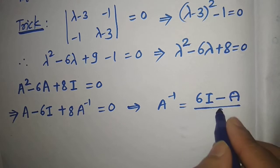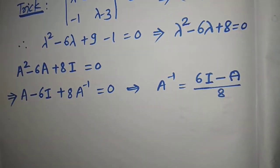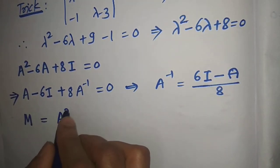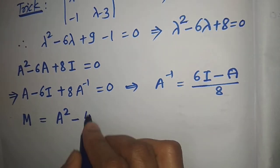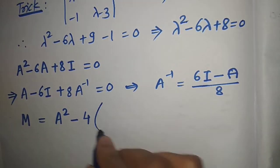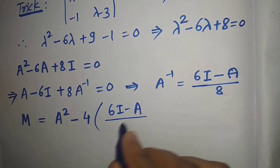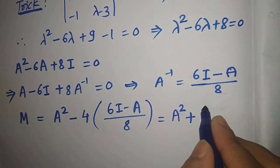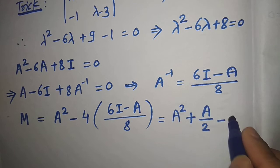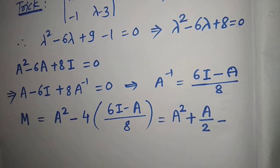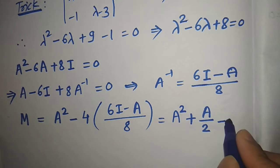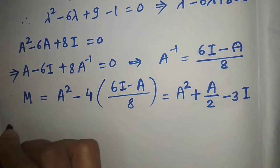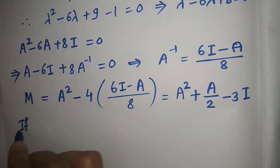Now M = A² - 4A⁻¹ = A² - 4·(6I - A)/8 = A² + A/2 - 3I. So M is a polynomial in A.